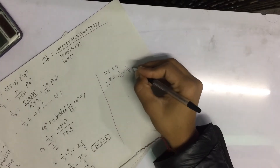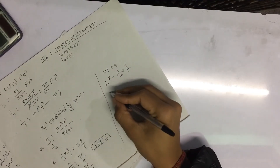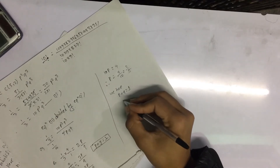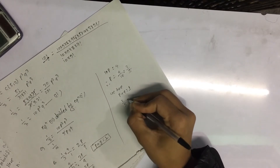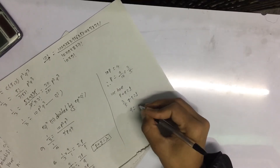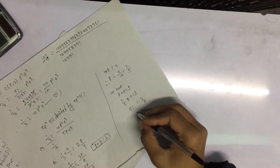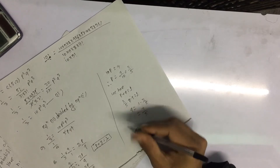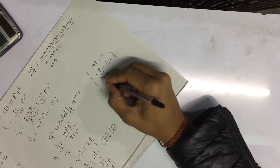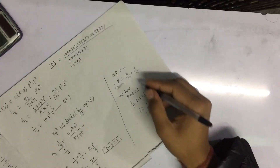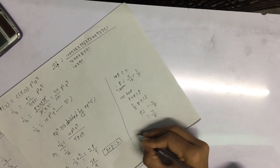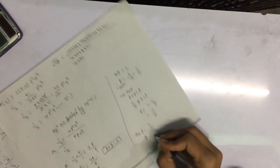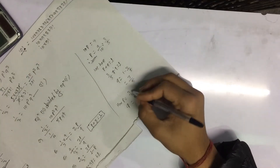So probability of success p equals 2 by 5. Using p plus q equals 1, we get 2 by 5 plus q equals 1, so q equals 1 minus 2 by 5, which gives q equals 3 by 5. Hence probability of success is 2 by 5 and probability of failure is 3 by 5.